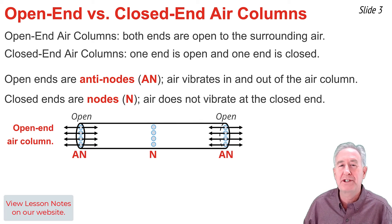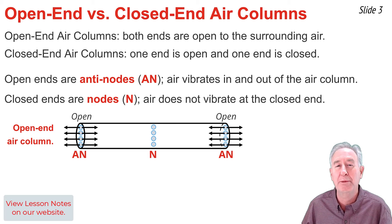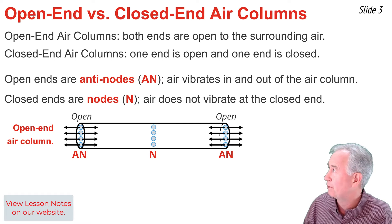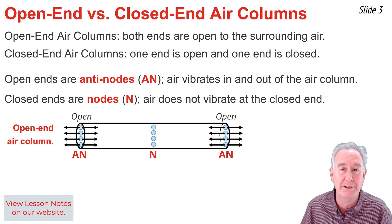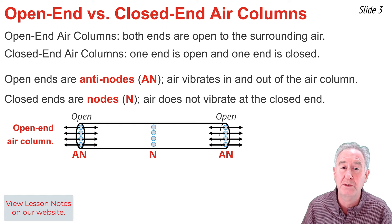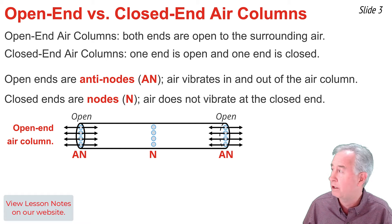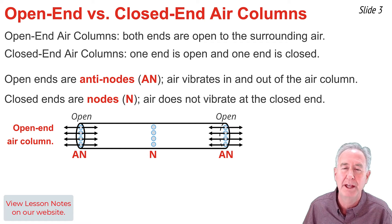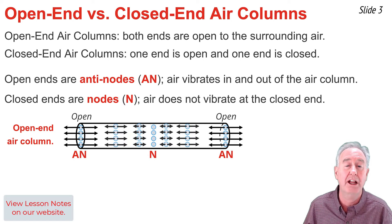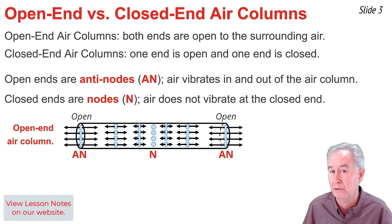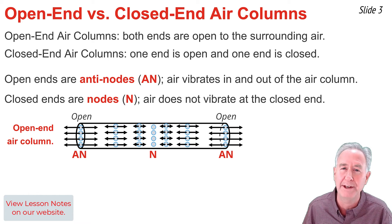This diagram represents the vibrational pattern of air particles of an open-end air column as it resonates with its first harmonic. You'll notice that anti-nodes are formed at the two open ends of the air column. Air at those ends is free to vibrate into and out of the air column from a maximum positive to a maximum negative displacement, and in between every two anti-nodes, a node will be formed — shown in the middle of the air column. In between the middle and the ends of the air column, air is still free to vibrate, just not a maximum amount like it does at the open ends.